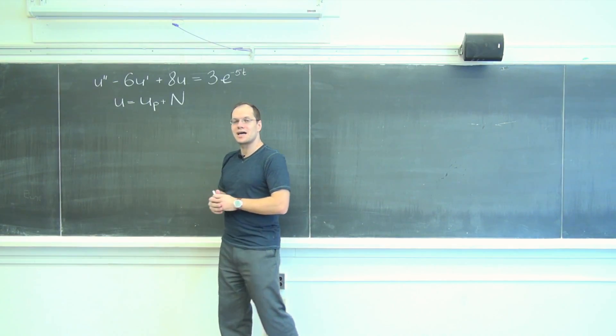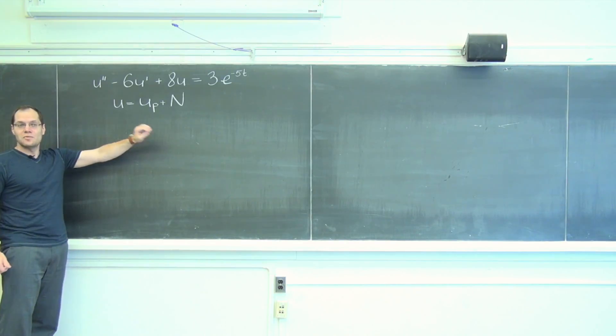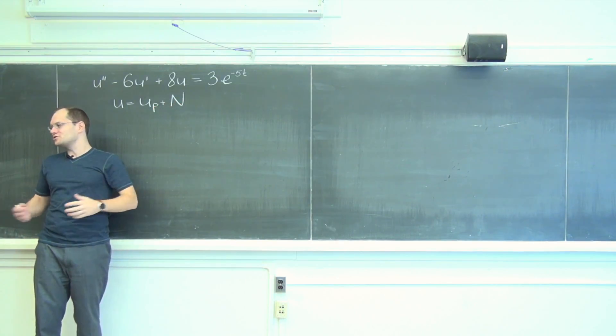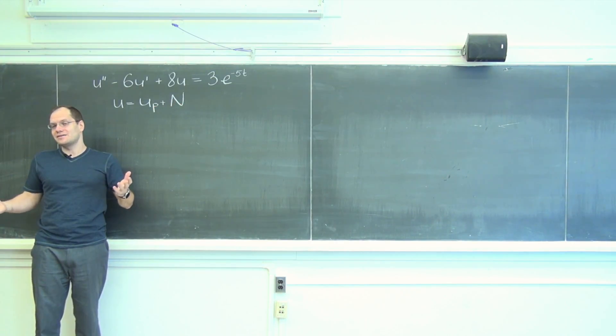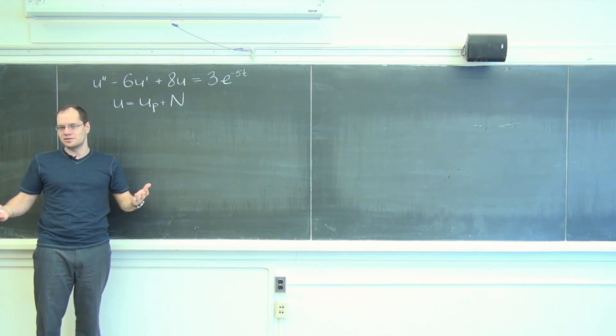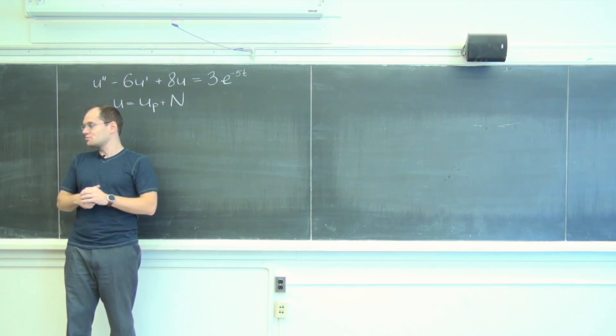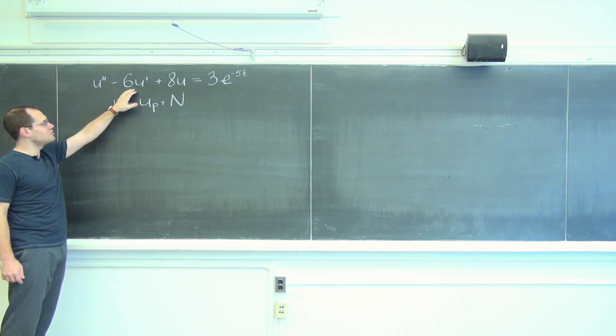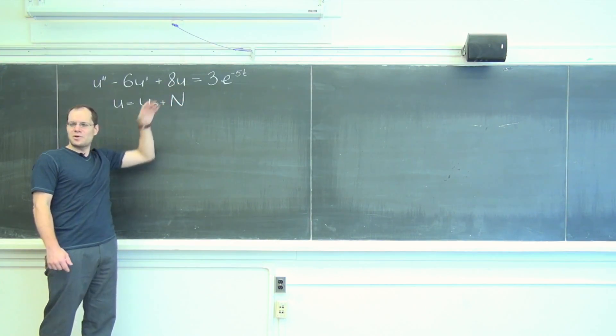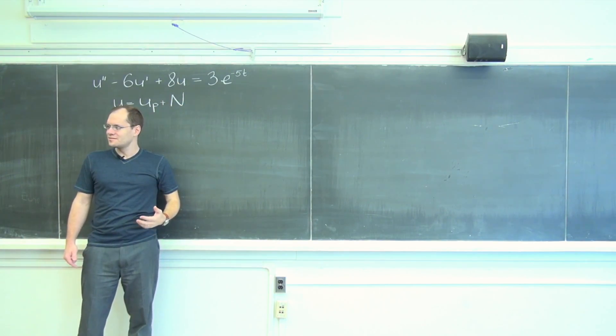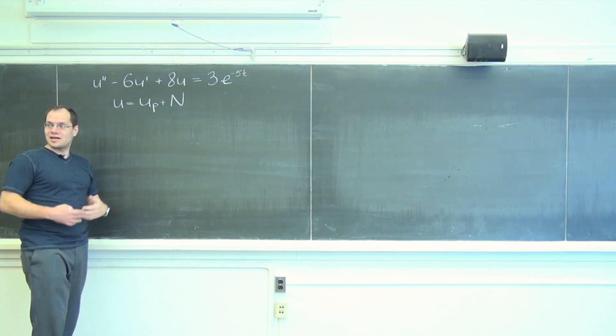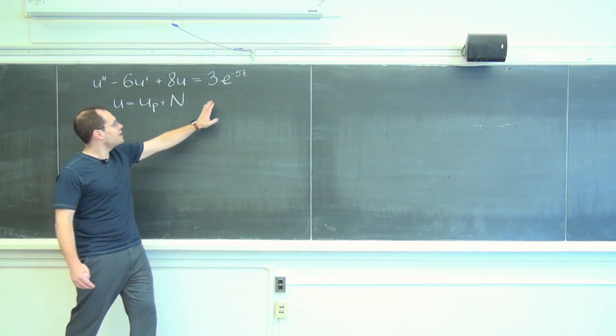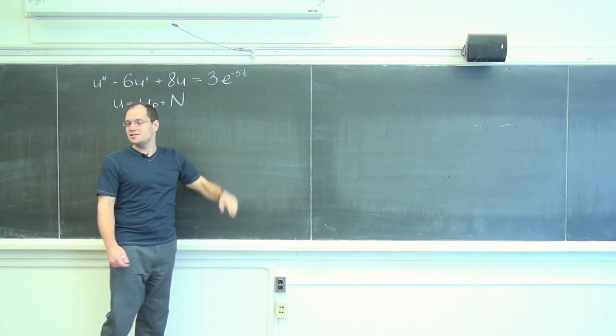So let's take a guess. We have to plug in something into this differential operator. It always helps to say it in words because when you say it in words you're giving yourself directions. It's actionable: second derivative minus six times the first derivative plus eight times itself. So we have to think of something such that if you take the second derivative of it, subtract six times the first derivative of it, and then add eight times itself, you will have in the end three times e to the minus five T.